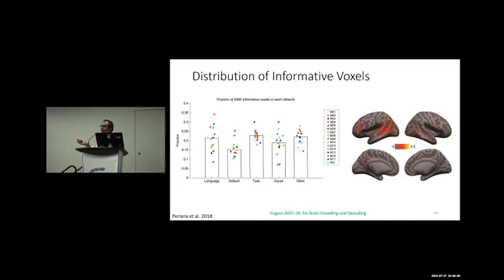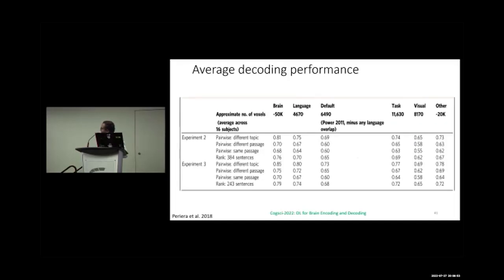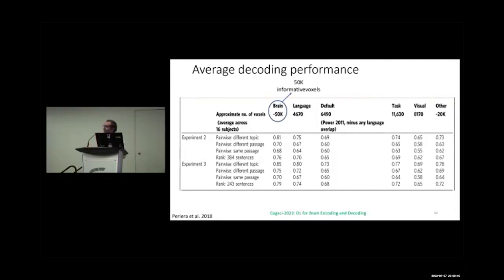The 5,000 informative voxels are clearly visible in the temporal and language areas. They also tried with 50,000 oak cells: even with 50,000 informative voxels, the decoding performance is almost similar to the 5,000 informative voxels.